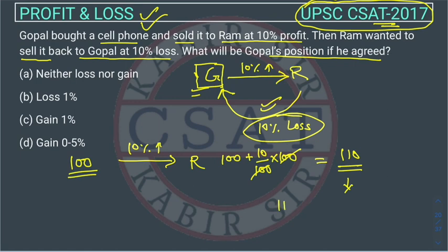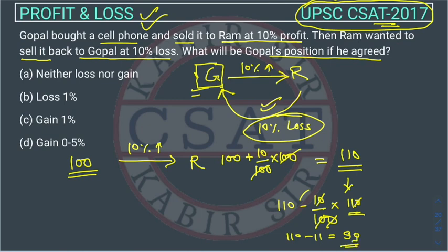Ram is selling at 10% loss, so a minus sign comes. The 10% loss is calculated on Ram's price of 110, not on 100. So: 110 minus 10% of 110 equals 110 minus 11, which equals 99. So Ram is selling back to Gopal at 99 rupees.